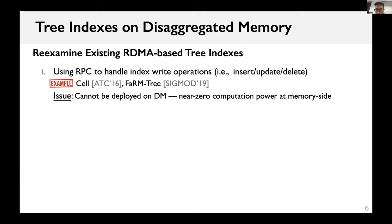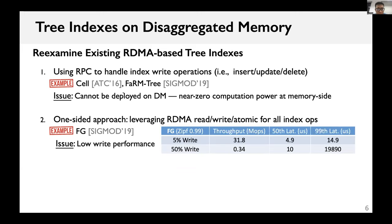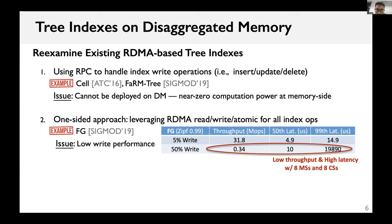Some tree indexes adopt a one-sided approach, leveraging RDMA one-sided verbs for all index operations. However, they suffer from low write performance. We tested FG, a B+ tree index using the one-sided approach. On write-intensive workloads, FG's throughput is less than one million operations per second, with high tail latency.